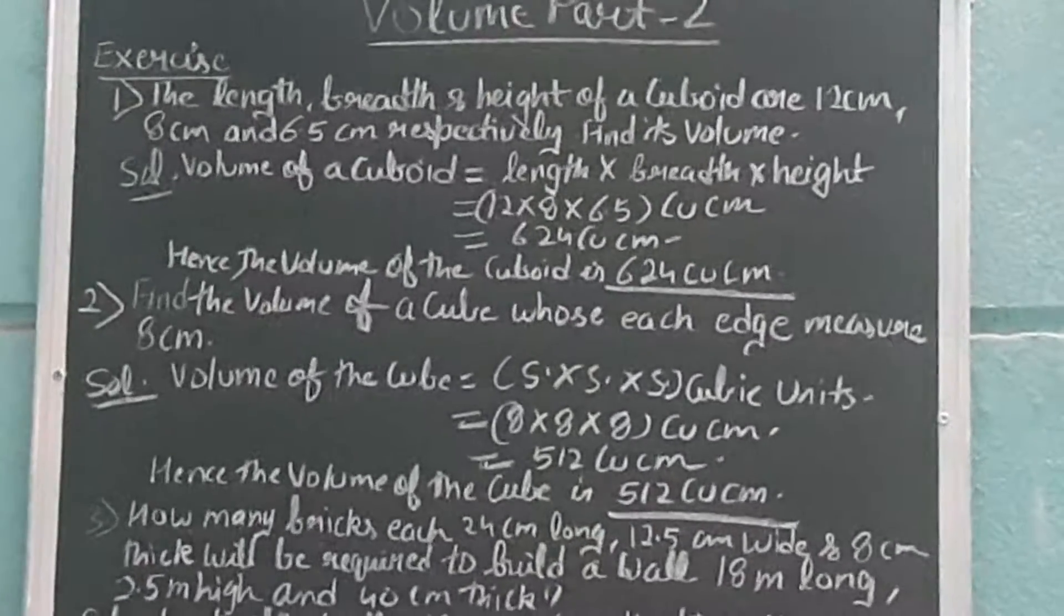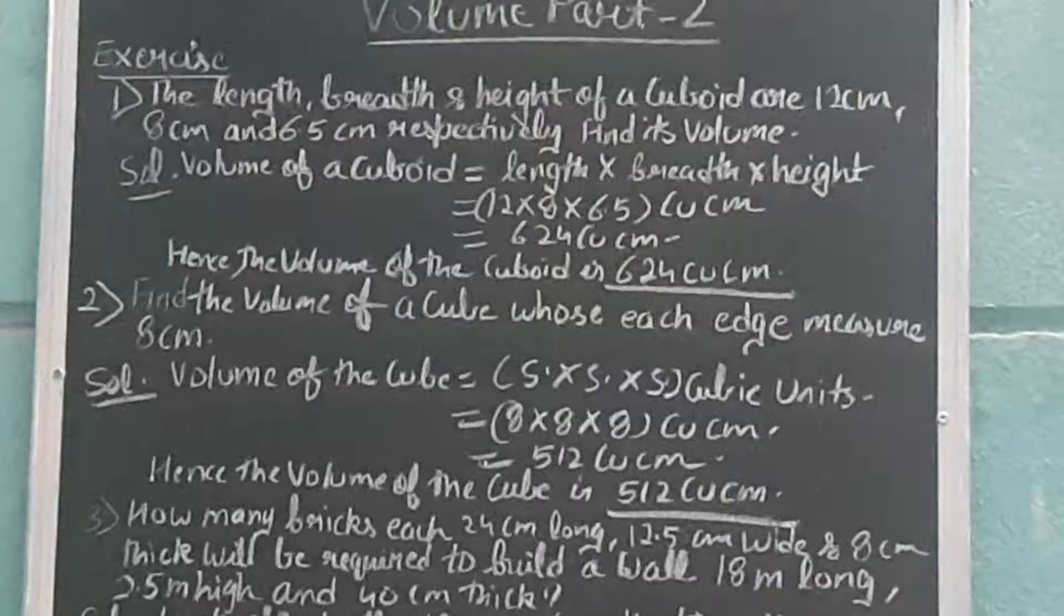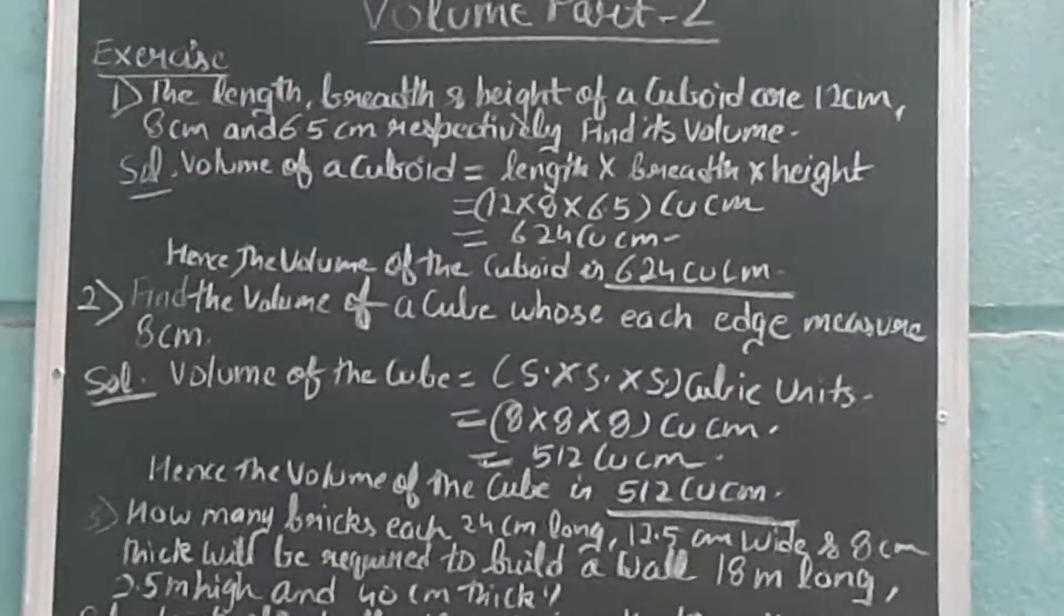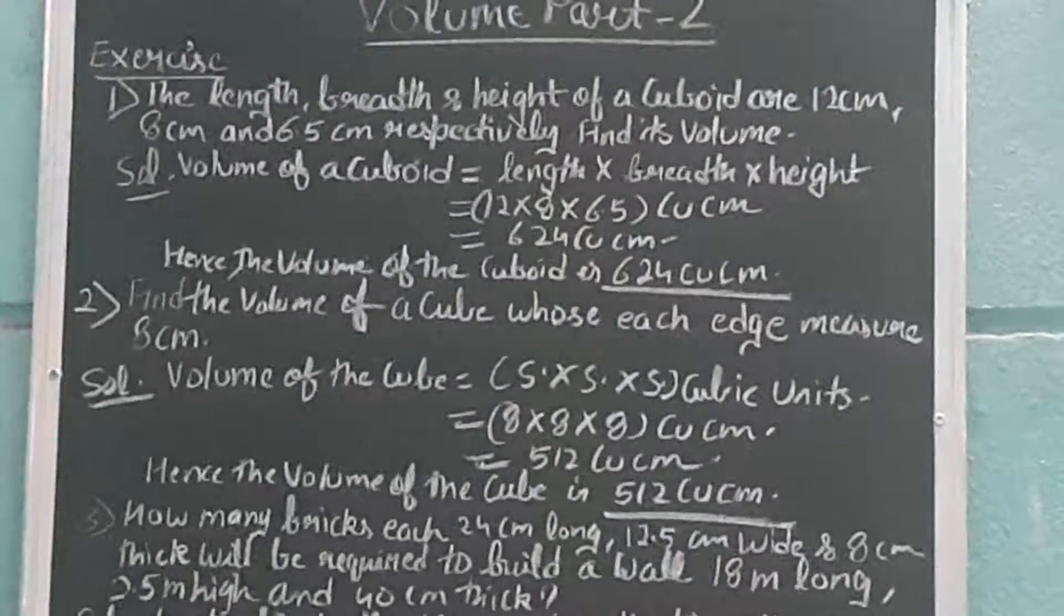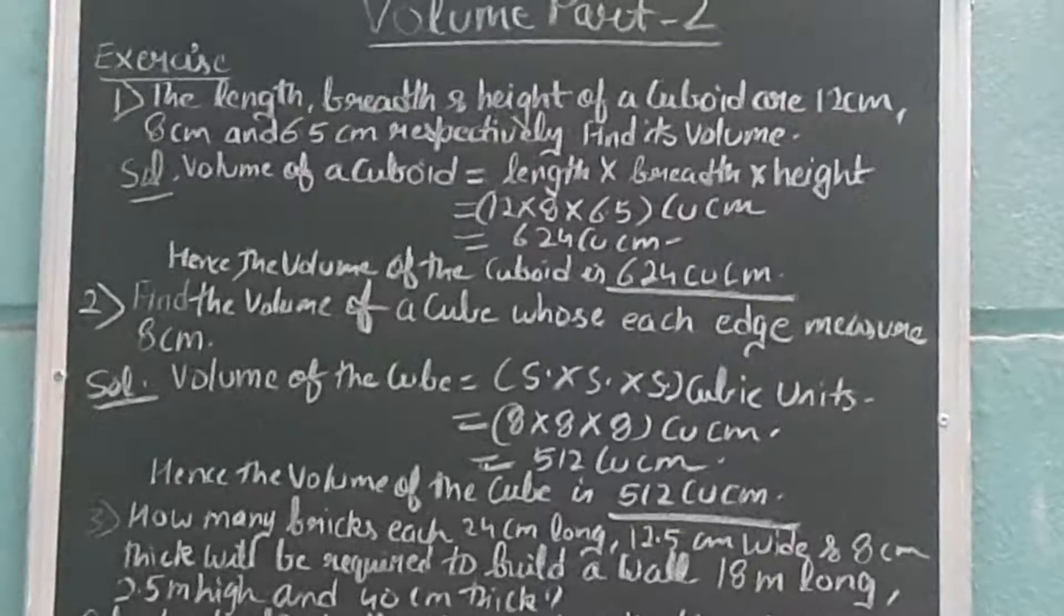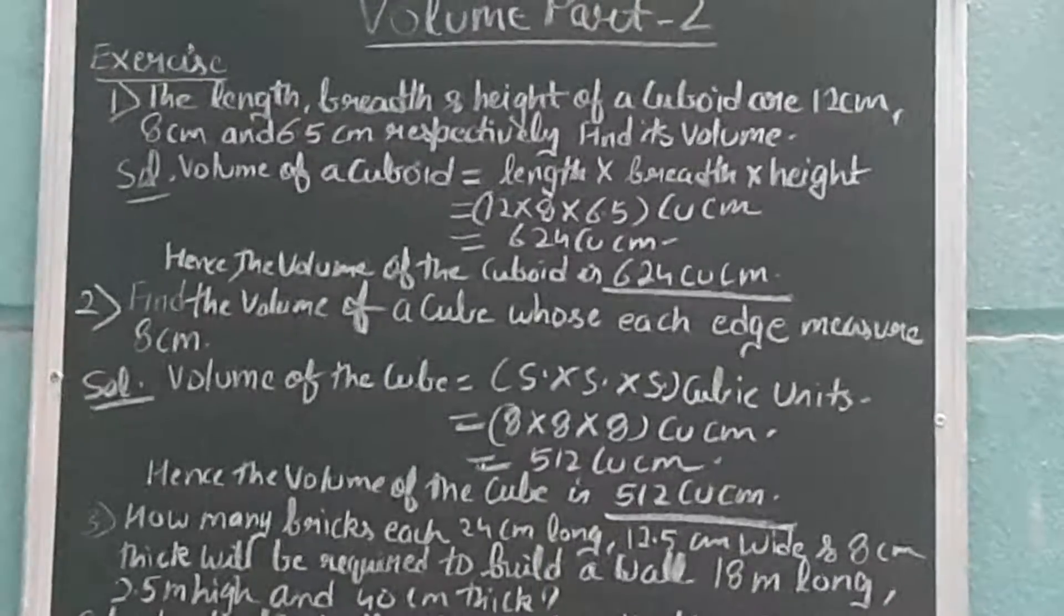The length, breadth, and height of a cuboid are 12 cm, 8 cm, and 6.5 cm respectively, and we have to find its volume. So what is the formula for finding the volume of a cuboid? It is equal to length times breadth times height.